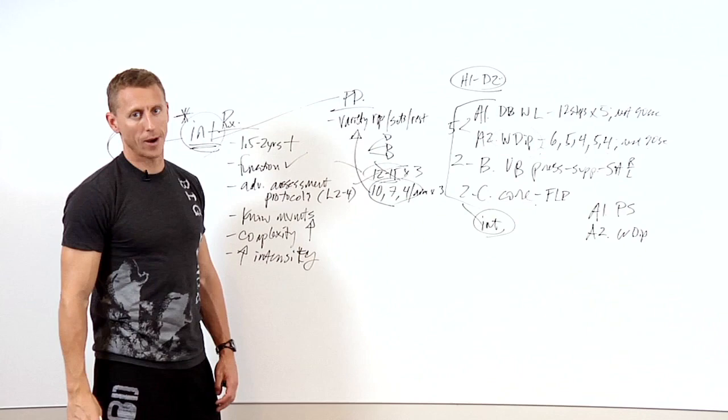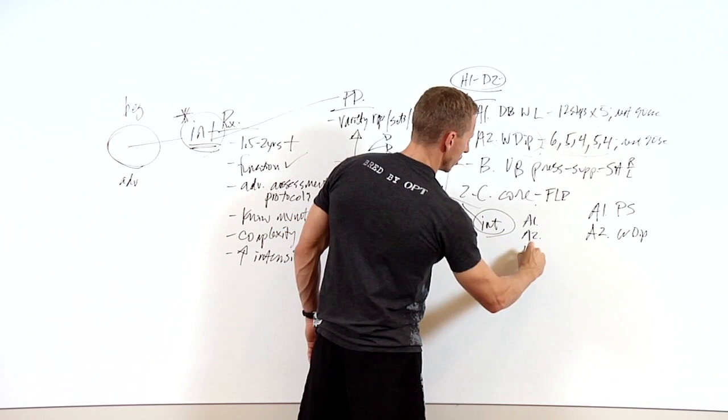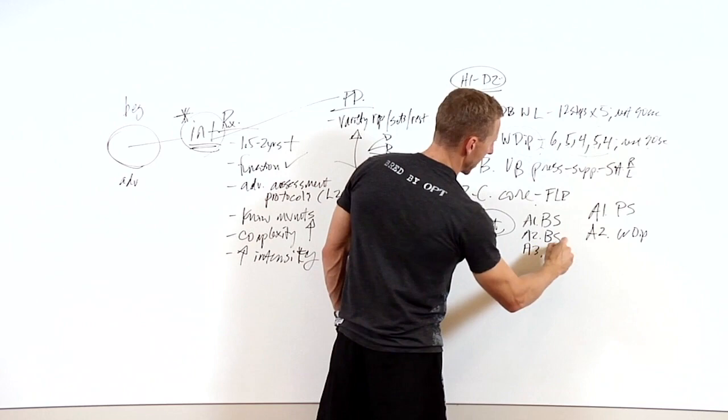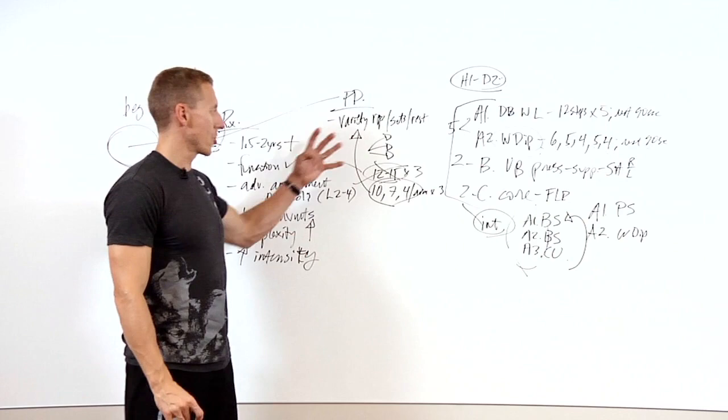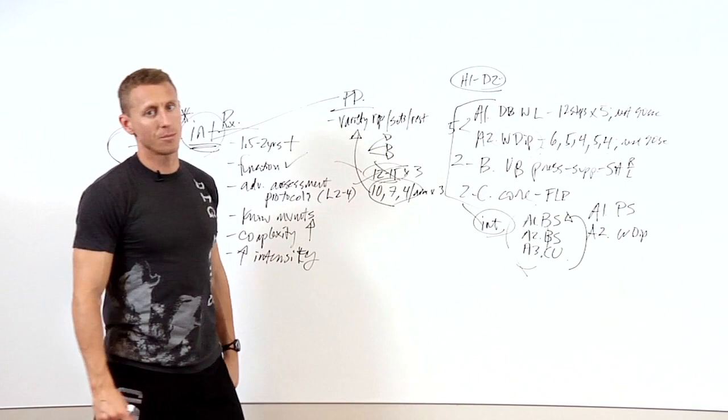We may do triple pairings now, we may go A1, A2, A3, where they'll do a back squat, and then another back squat drop set, and then a chin up, then they're going to rest and come back up again. This is set for an intermediate person now, because their nervous system is starting to develop enough that they can play with that, whereas it's not going to be in a beginner weight training protocol.